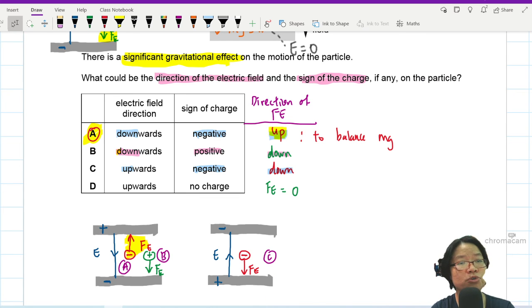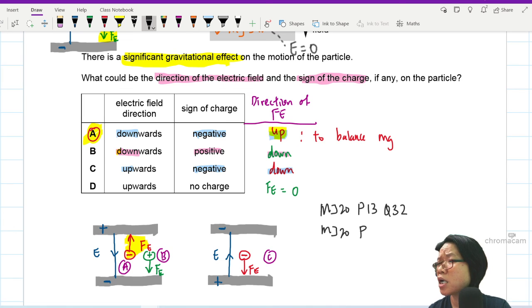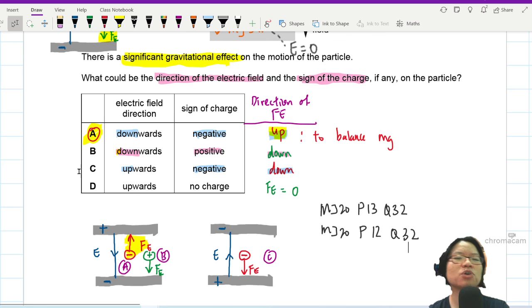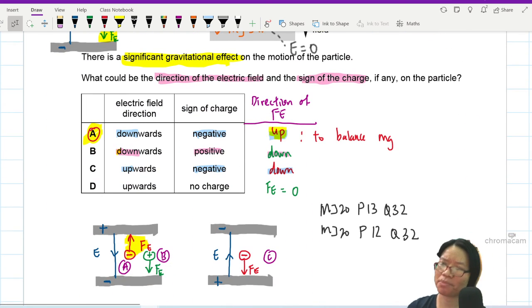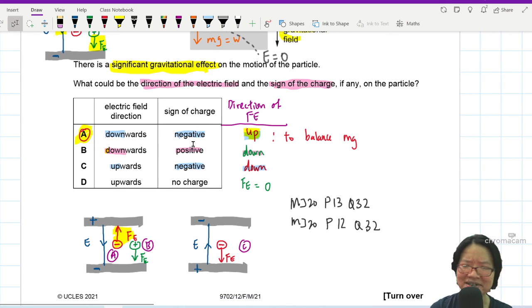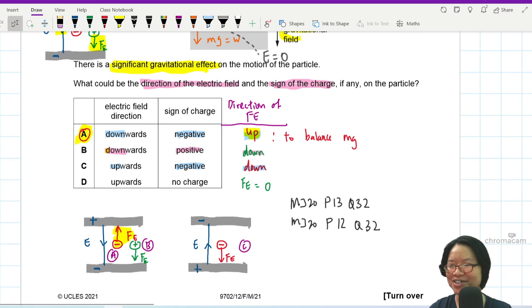So other non-conceptual questions that you might want to try will be from May, June 20, paper 13, question 32. May, June 20, paper 12, question 32. That's what I mean by it's very weird to see an electric field question so early in the paper. But never mind. It's okay. This is a Fatmash 2-1. Fatmash papers are always slightly anomalous. All right. That's it for this question.